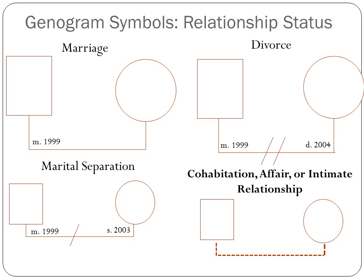For divorce, the lines are the same solid lines, but in the middle of that relationship line there are two backslashes, which indicates the individuals are currently divorced. In the bottom left-hand corner inside the line, we have M. 99 to indicate they were married in 1999. In the bottom right-hand corner, we put D. 2004 if the couple got divorced that year. Two backslashes in the middle of the relationship line indicates divorce.